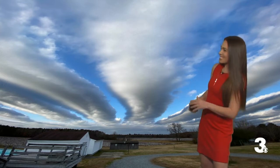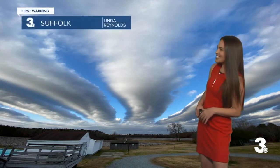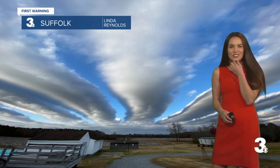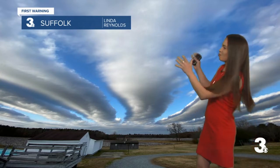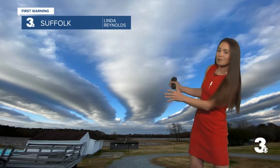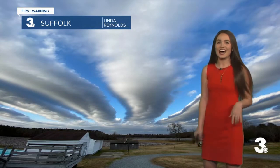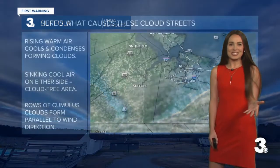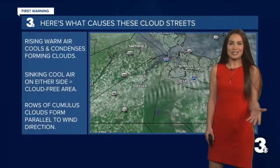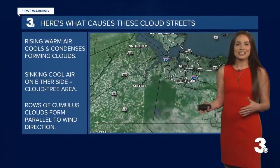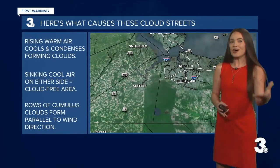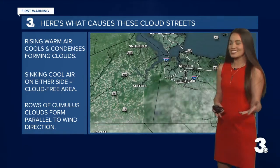This is a photo that was taken yesterday in Suffolk, sent in from Linda Reynolds, and she was thinking to herself, this is interesting, right? Almost looks like rows or what we call streets in the sky. And we wanted to explain this to you, these cloud streets, because if you were in Suffolk or in Chesapeake, you may have seen this yesterday. So here's what causes these cloud streets.